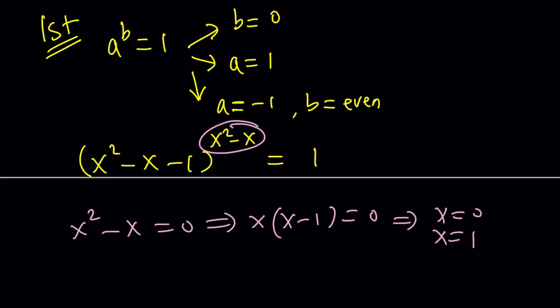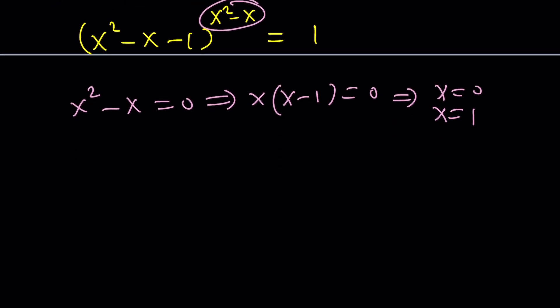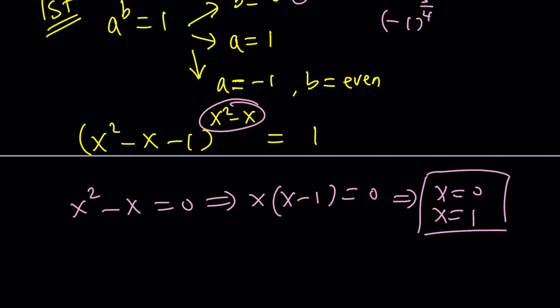That gives us two solutions. Do we need to check them? Well, it's better if you always check your solutions, especially with radical and sometimes exponential equations. Because with exponential equations, there's an issue with negative base raised to a rational power. So think about something like negative 1 to the power 3 over 4. What would that be? Would that be complex? Real? Anyways, so x equals 0 and 1. Those are two solutions that we got from case number 1. So far, so good.